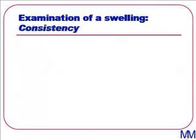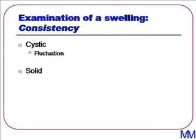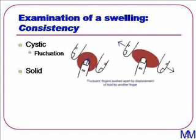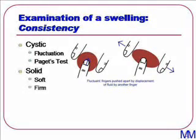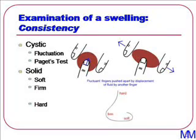We need to decide whether the swelling is cystic or solid. A cystic swelling contains fluid, so if you poke it, it distends in another direction. This is known as fluctuance, and is tested with Paget's test, which involves placing a finger either side of the swelling. If the swelling is cystic, pushing the swelling in its centre should displace the two fingers apart. We say that solid swellings can be either soft, firm, or hard, and we can relate this to the nose. The bridge of the nose is hard, the tip of the nose is cartilage so it's firm, and the alar of the nose is just soft tissue and is obviously soft.